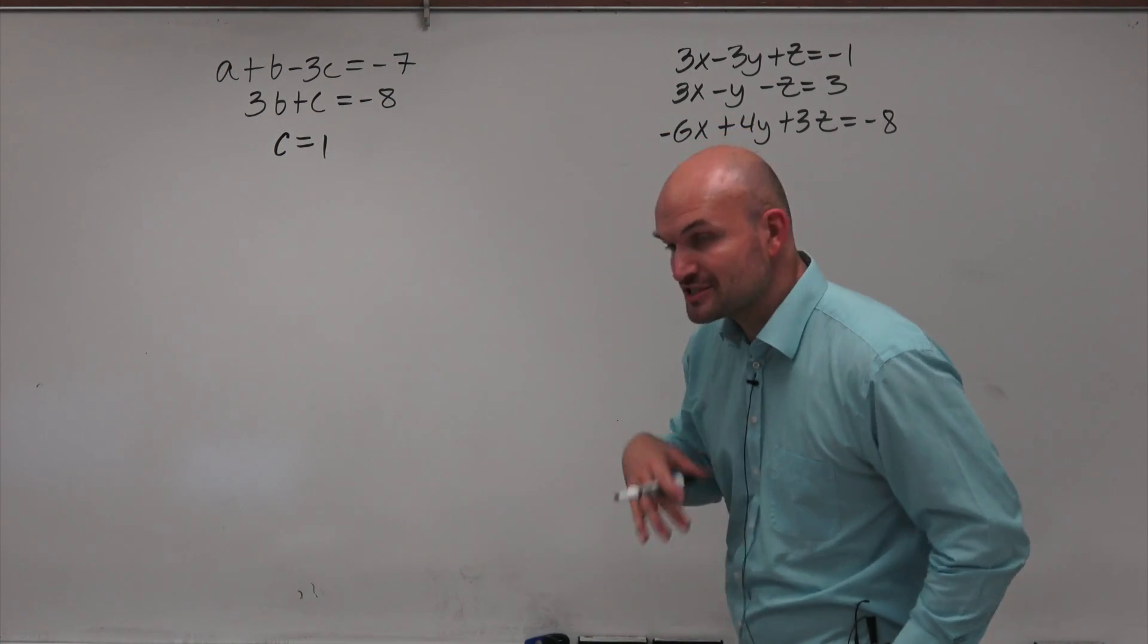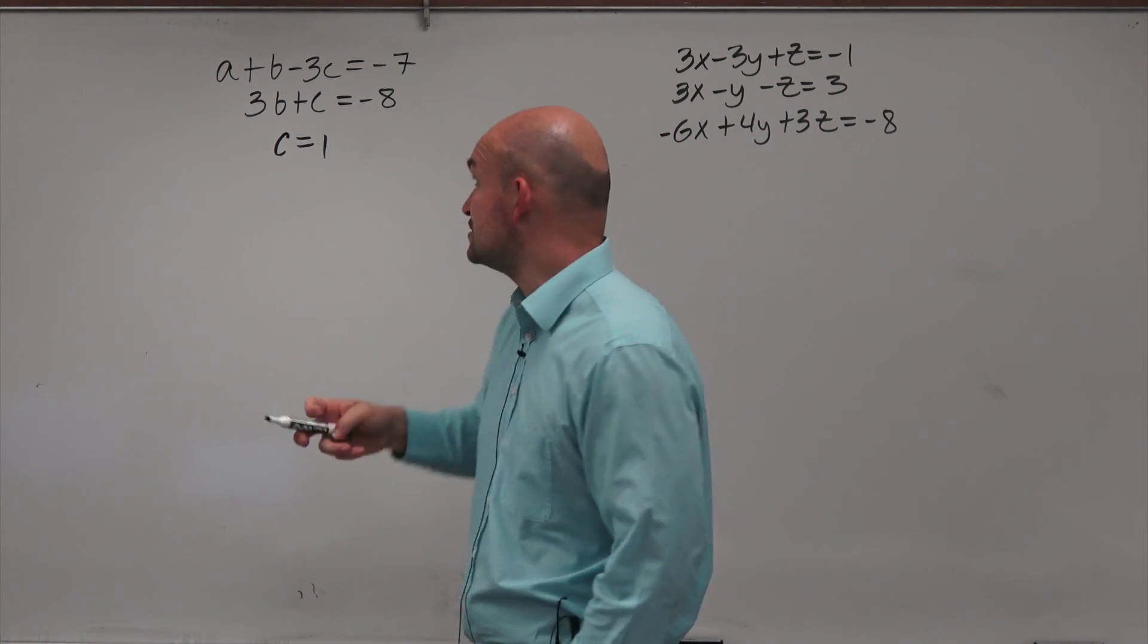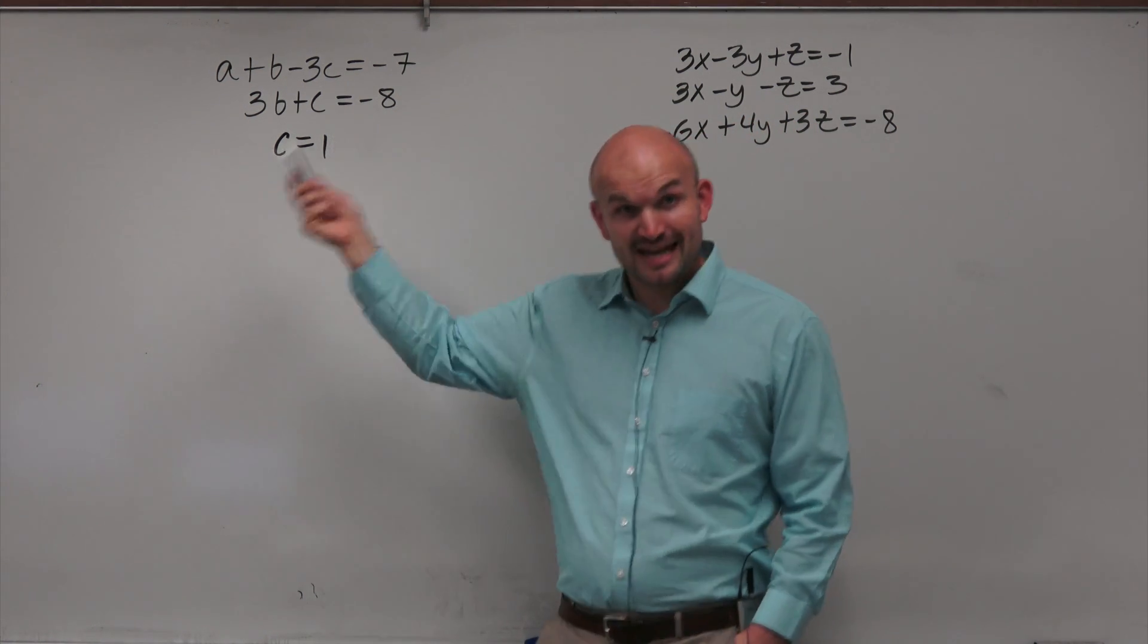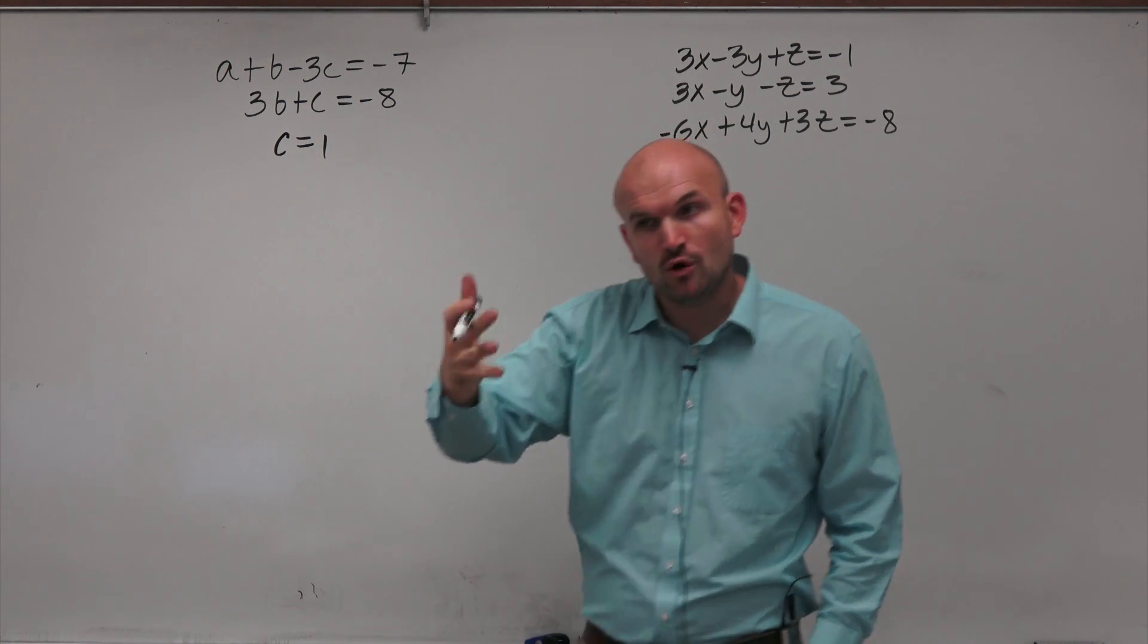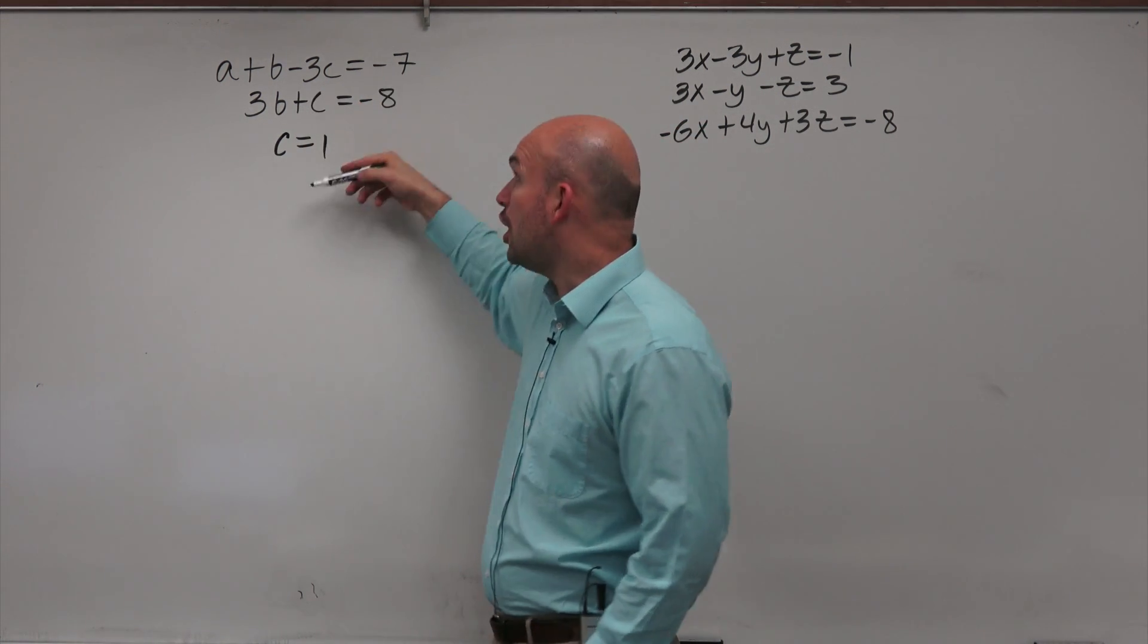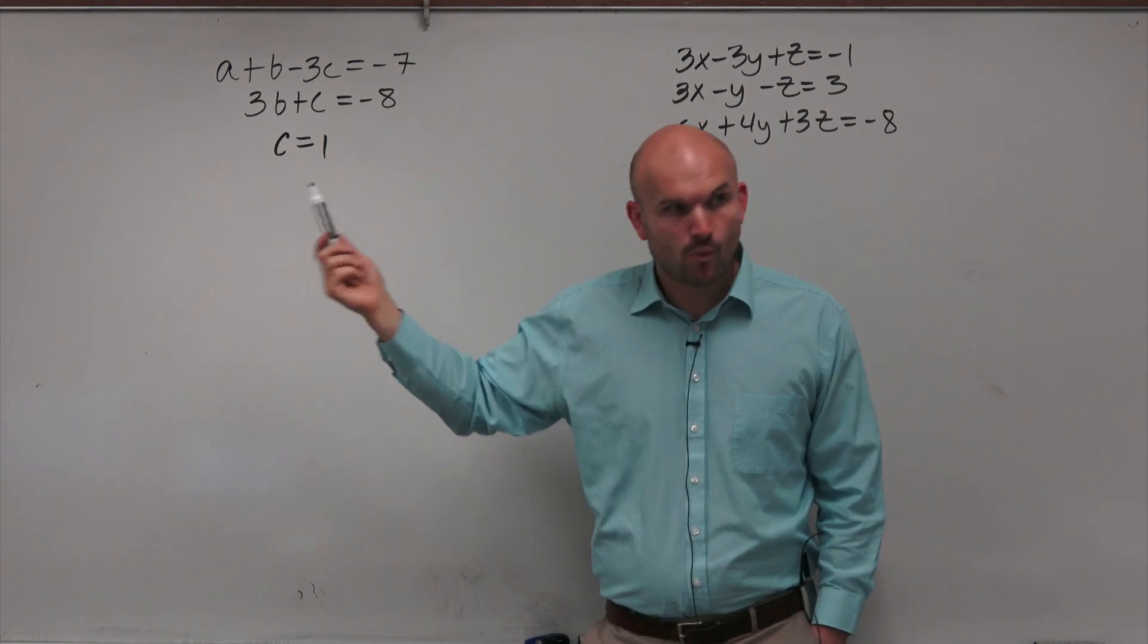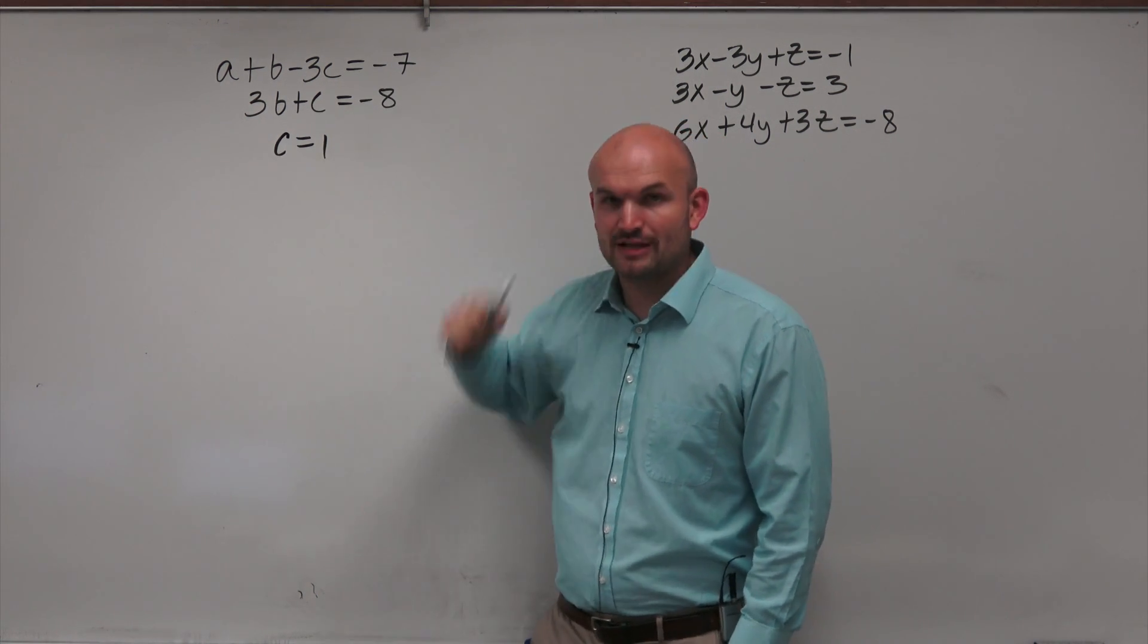Now, this first example is actually fairly basic. Because if you think about substitution, which we did in systems of two equations, we already have the value of c. That is one of our solutions. Again, our goal here is we're trying to find the values of a, b, and c that make all three of these equations true. Well, we already know what makes the last equation true. That's 1. When c is equal to 1, that equation is true.